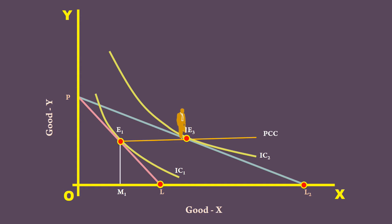6. He buys M3 quantity of Good X. 7. The net increase in quantity demanded is M1-M3.